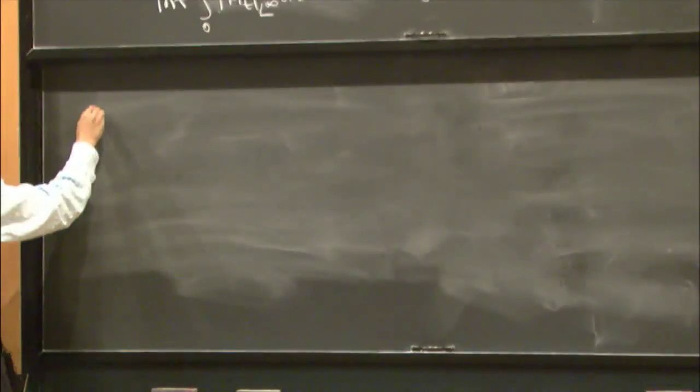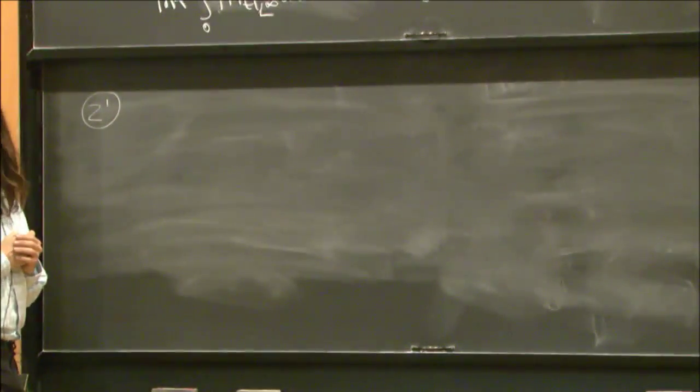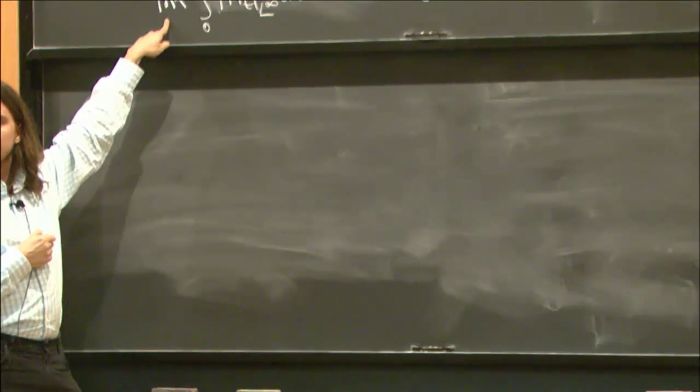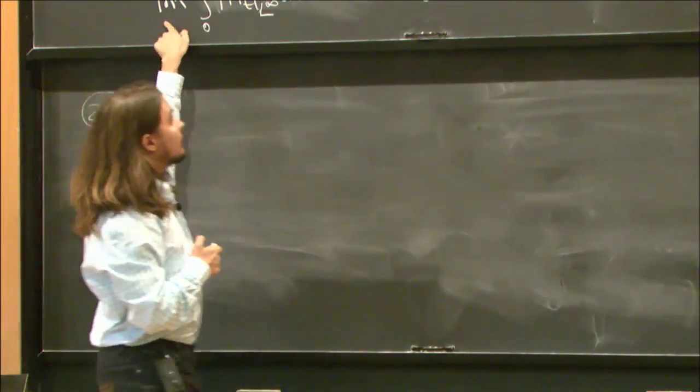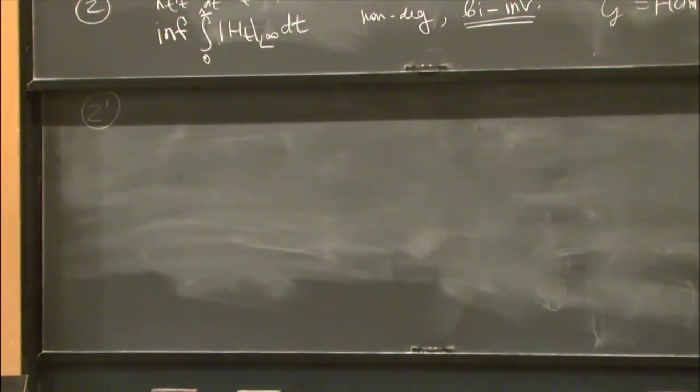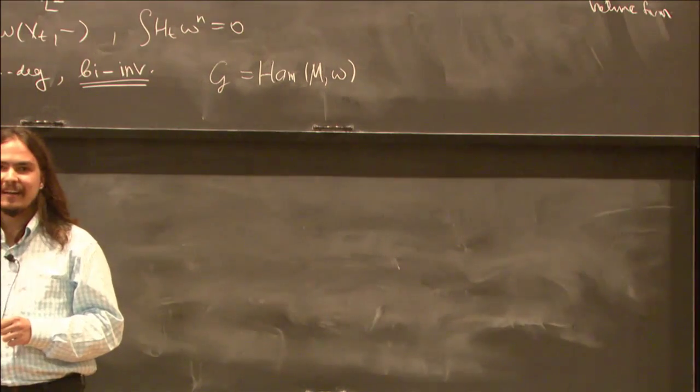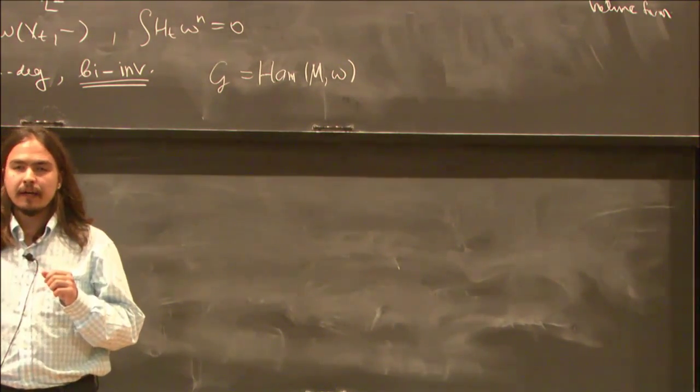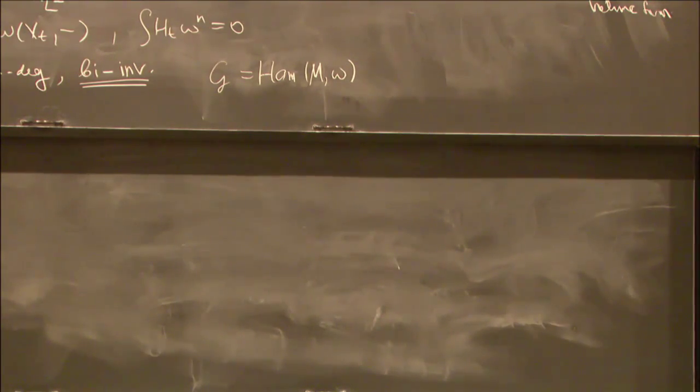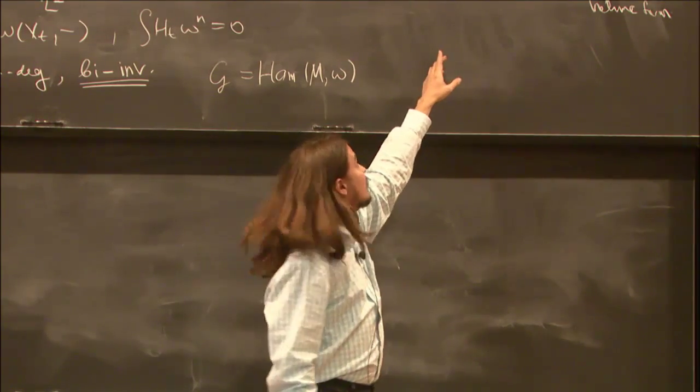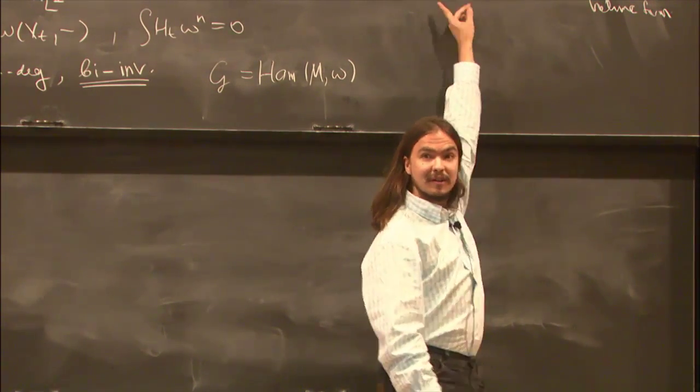A third example, maybe example two prime, is in the contact case. Here G is the group of Hamiltonian diffeomorphisms of a symplectic manifold. It is really the same. For S2, it is exactly the same. This is always a bi-invariant metric. But this L1 metric is not bi-invariant, it is only right invariant.